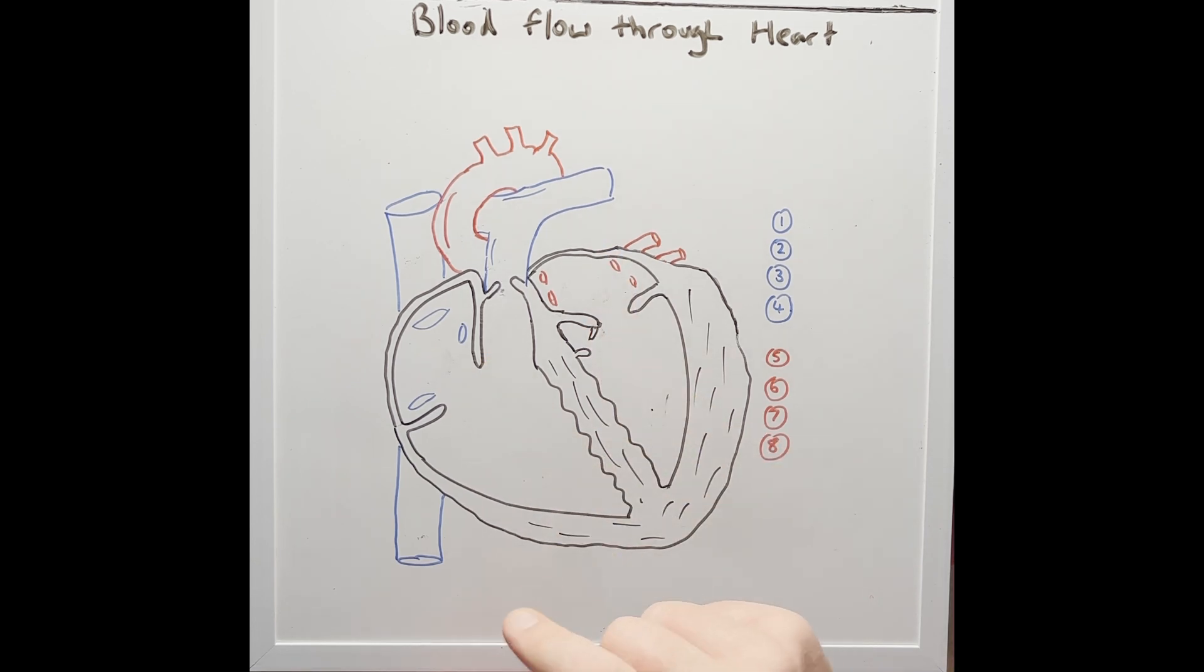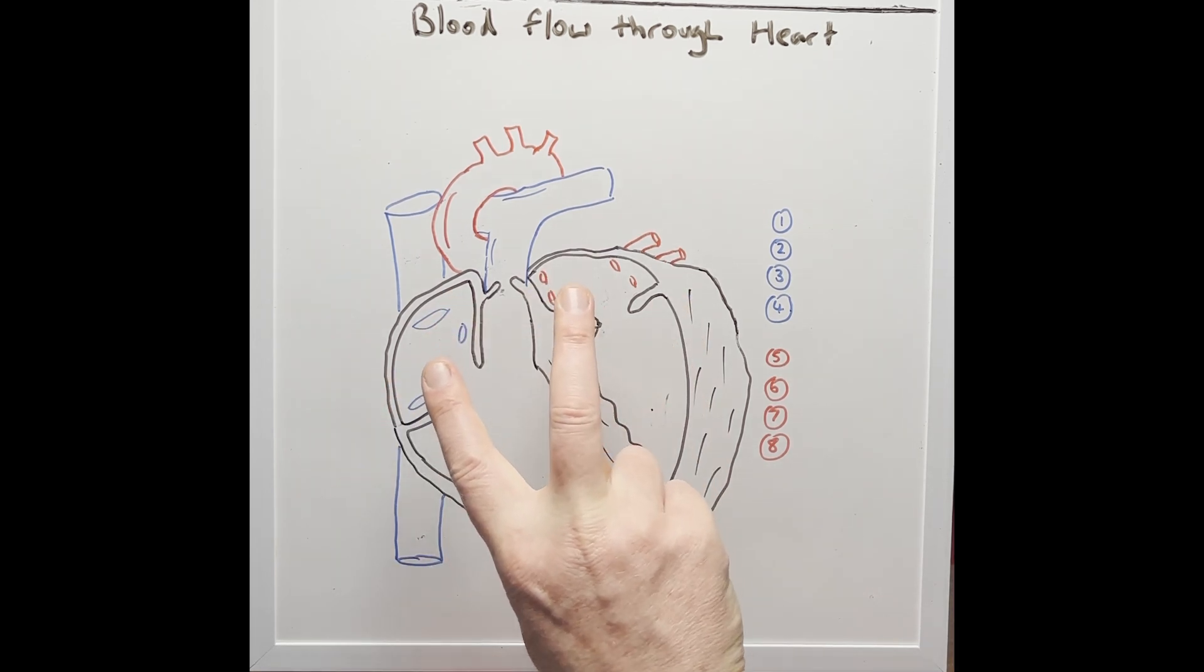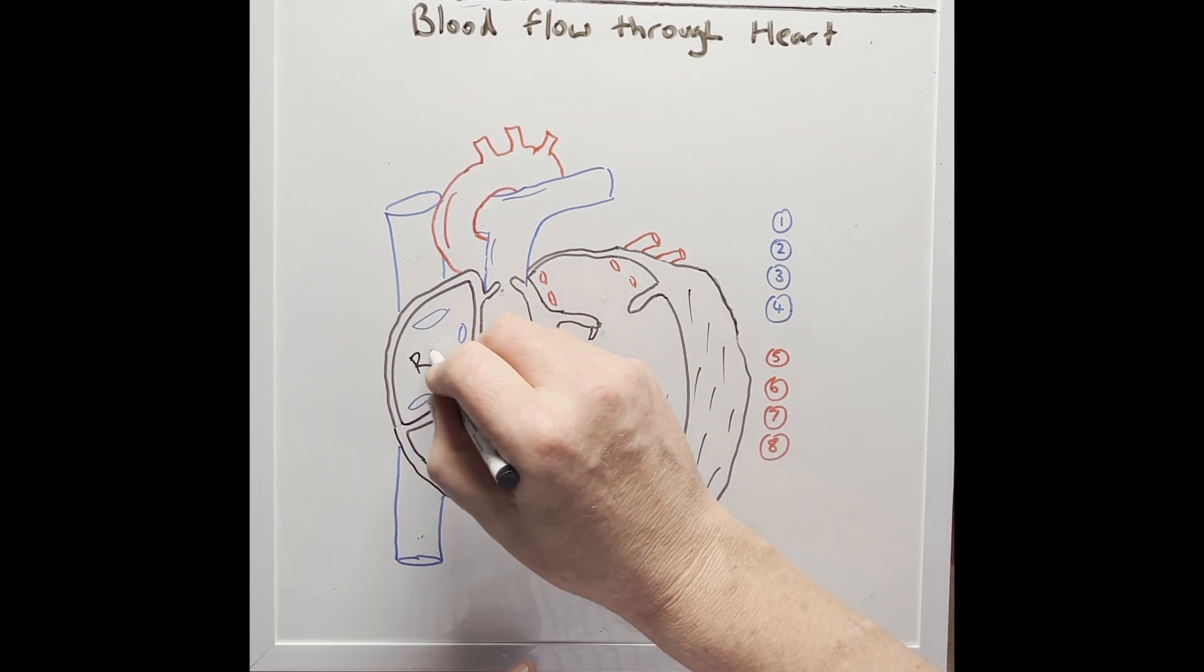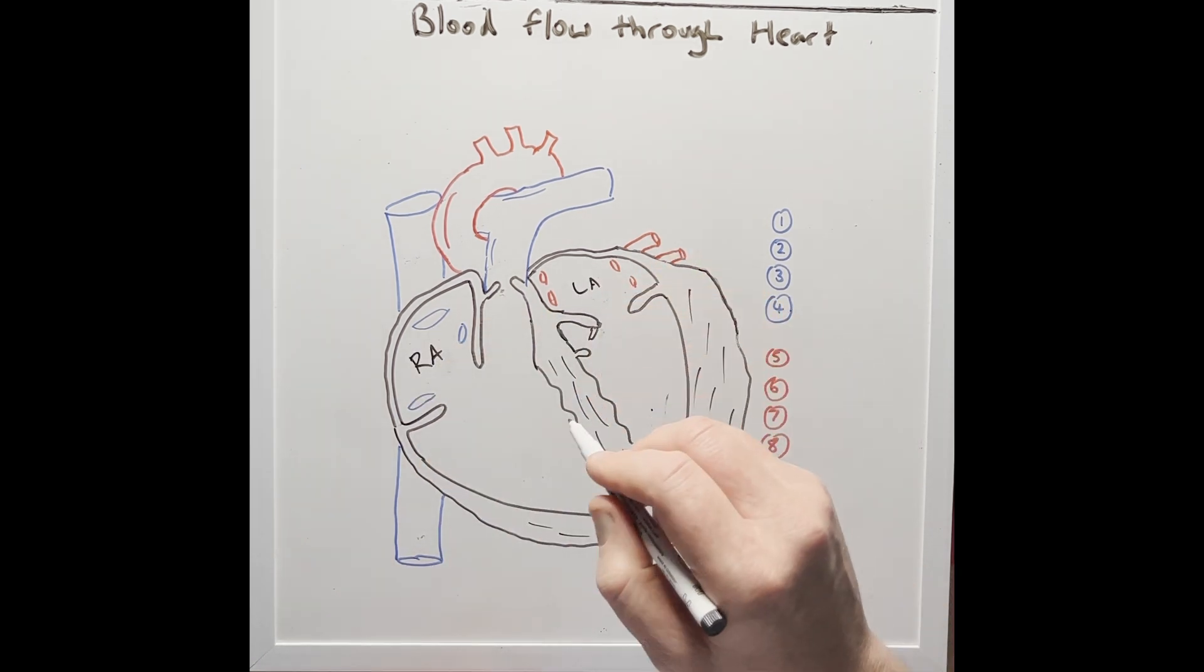In this two-minute mini-lecture, we're going to outline the blood flow through the chambers of the heart. So the heart has four chambers, two superior chambers that receive blood from veins. These chambers are the right atria and the left atria.